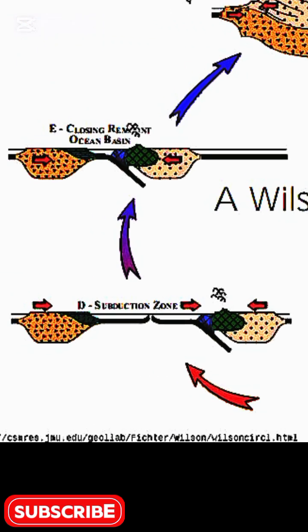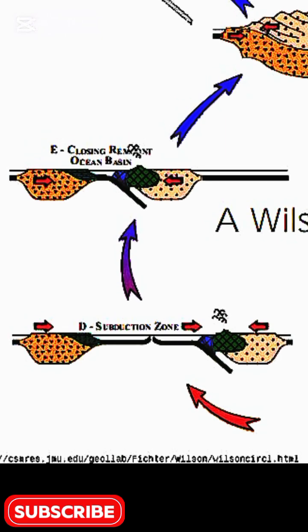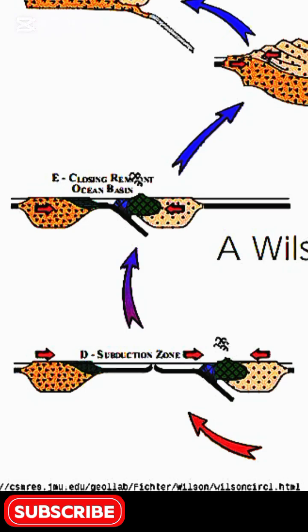From stage C to stage D, a subduction zone forms. Oceanic crust dives beneath the continent, recycling into the mantle. As we talked about in the last lecture, Pacific plates sink under South America, creating the Andes Mountains.